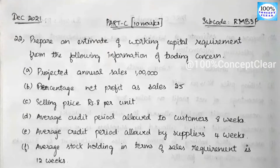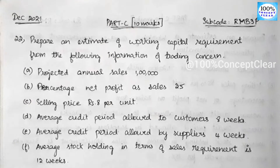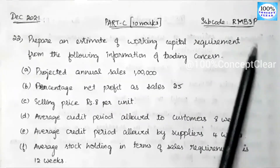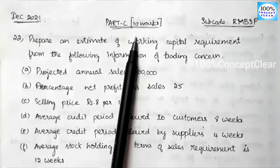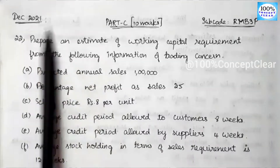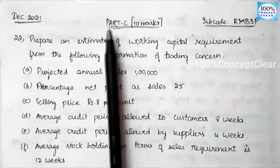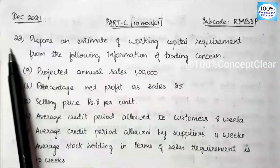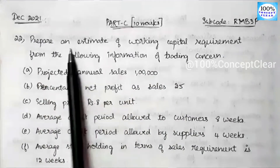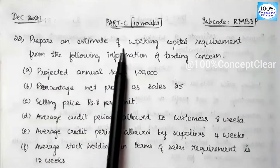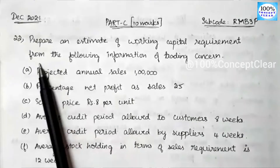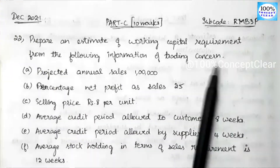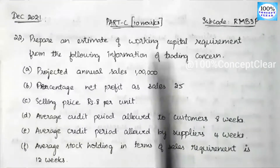Today we have a Financial Management subject. The subject code is RMB3P. We have a question from December 2021, Part C, worth 10 marks. The question asks us to prepare an estimate of Working Capital Requirements from the given information of a Trading concern. This is our Working Capital Requirements sum.